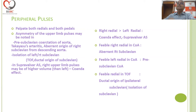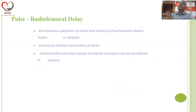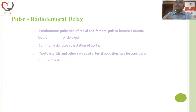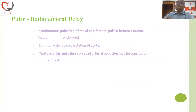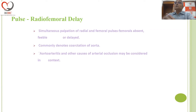We have illustrated some of the reasons for asymmetry of the upper limb pulses. When you feel the radial pulse with the femorals, if you find that the femorals are absent, feeble, or delayed, that's what you call a radio-femoral delay — it commonly denotes coarctation of the aorta. But in an elderly adult it may be due to arteriosclerosis, and even in children, aortoarteritis can cause patchy loss of pulses, including a radio-femoral delay.